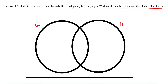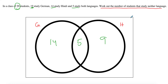The first thing you put in is the intersection. Five study both languages, so from the 19 German students I've already counted 5, leaving 14. From the 14 Hindi students, I've already counted 5, leaving 9. The total is 29 students. So 14 plus 5 plus 9 equals 28.